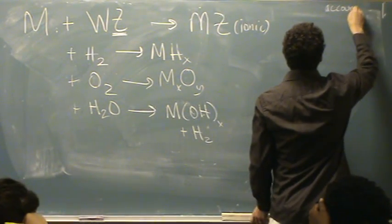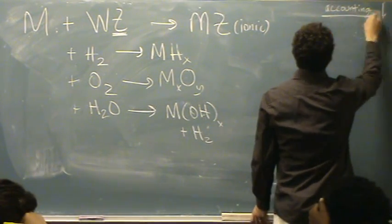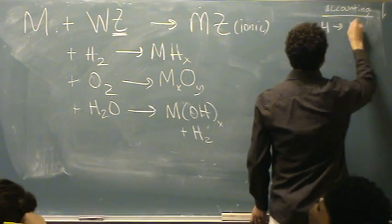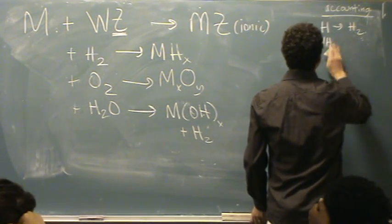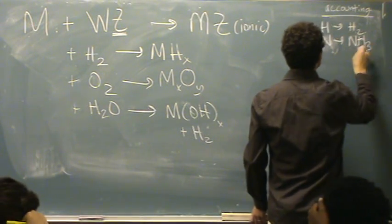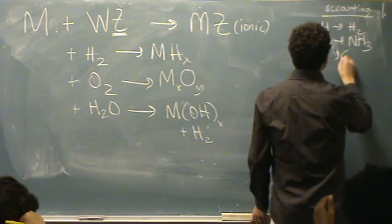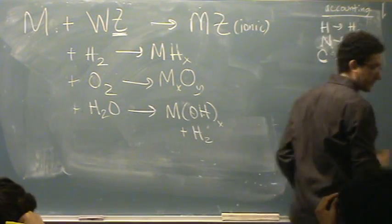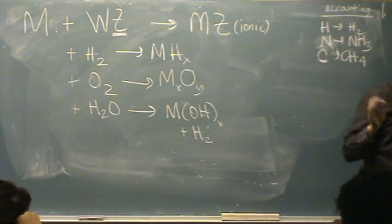So let me make a little table over here. Accounting. If there's extra H, you've got to write H2 in the products. If there's extra nitrogen, you write NH3 in the products. If there's extra carbon, then it's CH4 in the products. We'll see the other ones in just a second. So far we've just seen H2.